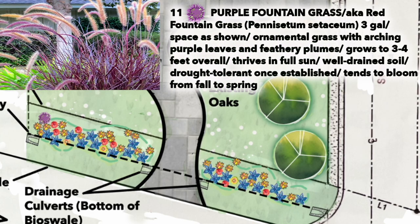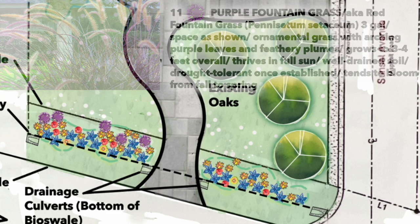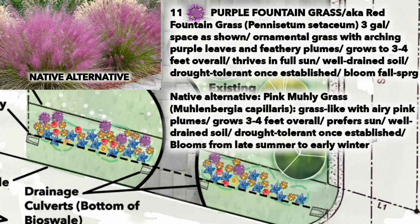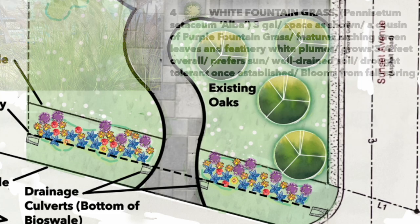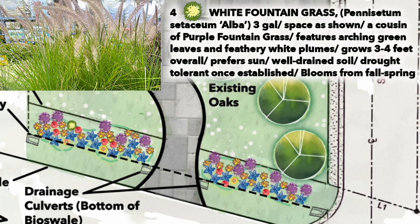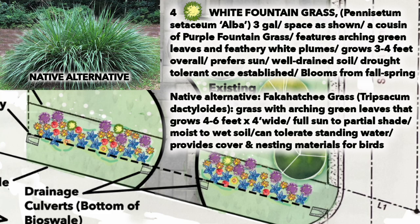Here we have the Purple Fountain Grass, which gets to about three or four feet tall. It likes a little bit drier conditions so we're putting it further up the slope. A great native alternative is Muhly Grass, with beautiful pink billowy plumes. We're also adding four White Fountain Grass plants to add a little contrast, and a great native alternative to that is the Fakahatchee Grass or Dwarf Fakahatchee Grass — both are excellent Florida natives.